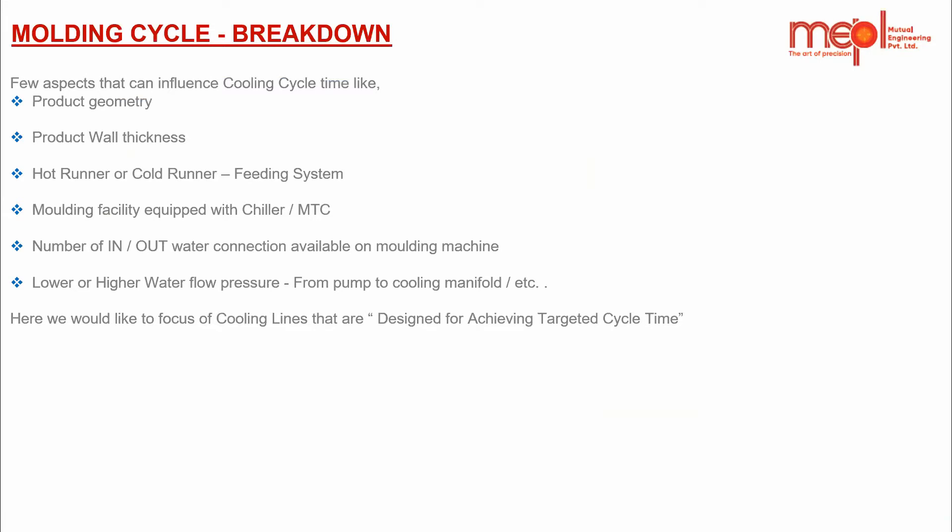The factors that can influence cycle time are based on our 40 years of experience — continuous learning and reflecting on past learnings. Product geometry and product wall thickness both contribute significantly to how quickly we can mold a part and get a right part out. Hot runner or cold runner feeding system is very important, as is the molding facility being equipped with a chiller or MTTC. Water flow pressure accuracy is critical not just in software but also in implementation.